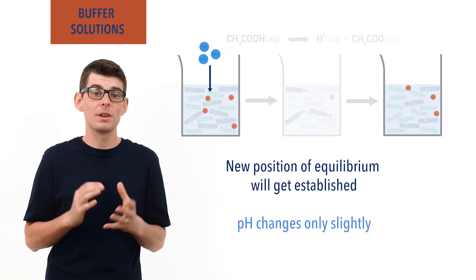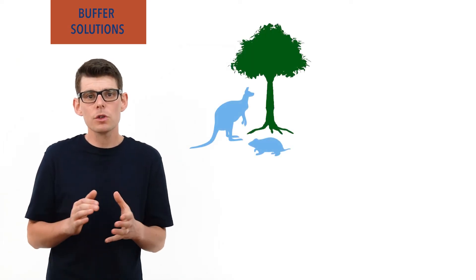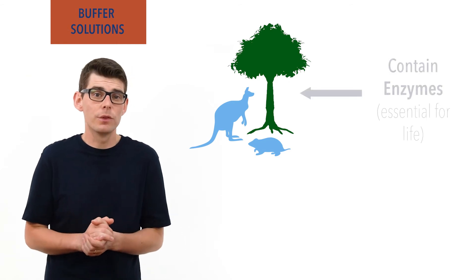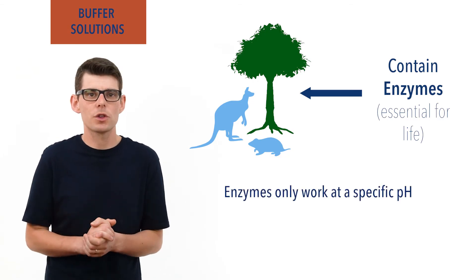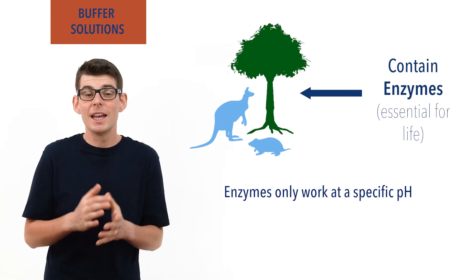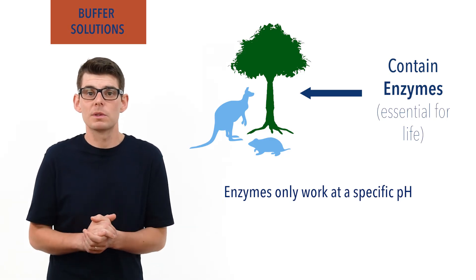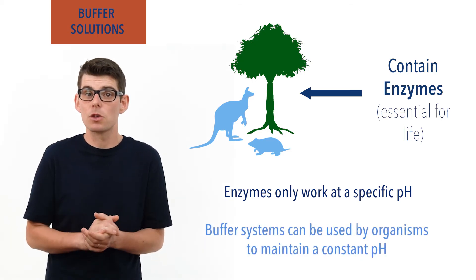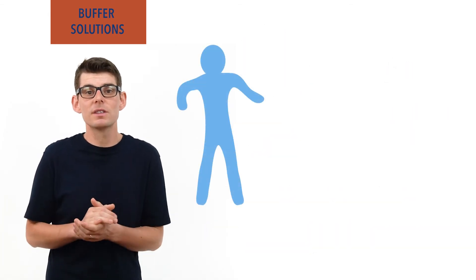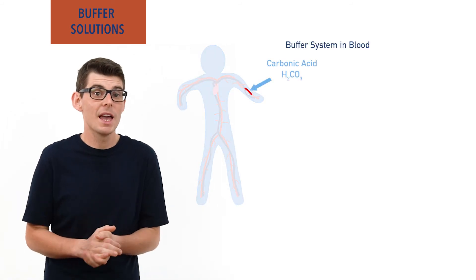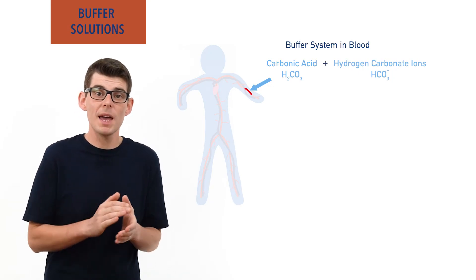Buffer solutions can be very useful and are found in a whole range of situations, most notably in nature and biology. In biological systems, biological catalysts called enzymes are vital for pretty much all processes essential for life, and they have an optimum pH at which to function. If the pH of its environment changes too much, an enzyme can denature and no longer work effectively. To help avoid this, most organisms have some form of buffer system to keep the pH constant and stop enzymes from denaturing. For example, in humans there is a buffer system in our blood made up of carbonic acid and hydrogen carbonate ions (HCO₃⁻). The hydrogen carbonate ions are the conjugate base of carbonic acid.